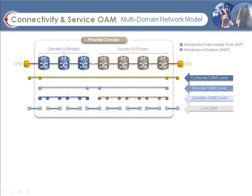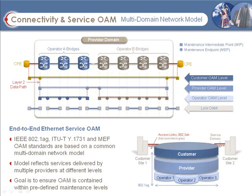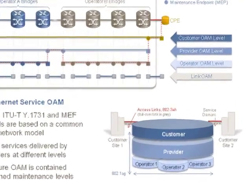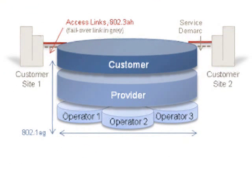Connectivity fault management, defined in both 802.1AG and Y.1731, divides the provider's end-to-end network into three distinct levels or maintenance domains: a customer, provider, and operator domain. The operator domain normally refers to a partner carrier's network, accommodating end-to-end links that involve a number of intermediate service providers for transport. CFM respects this hierarchy by ensuring that faults identified in a lower layer, for example an operator's network, are alarmed only at their level and at the next higher level, to notify a service provider that there is an issue in the operator's network. This allows a service provider to reroute traffic around the outage, while the operator has detailed fault isolation information to correct a problem within their own network. The multi-domain OAM model ensures that the fault is alarmed and regulated within the appropriate domain, while preventing a mass broadcast of alarms throughout all layers of the network.